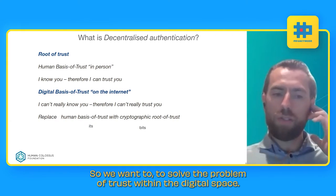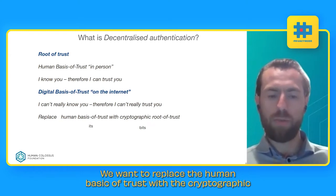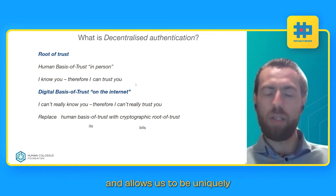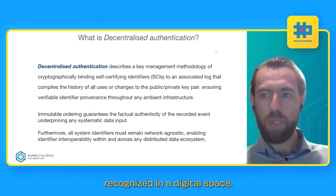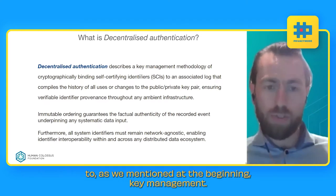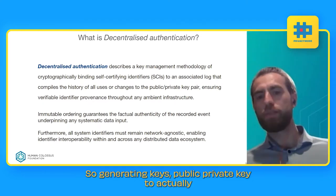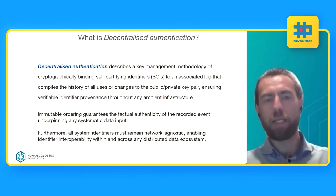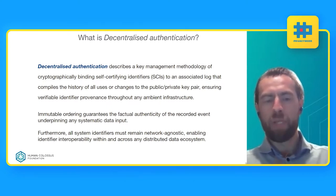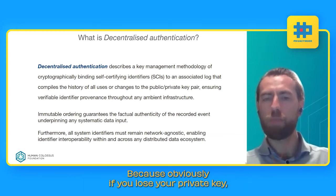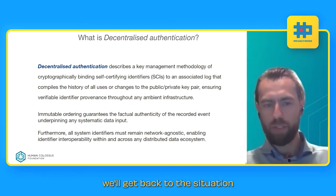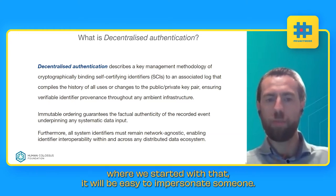Cryptography is based on the entropy you generate, and from that you generate elements used for cryptographical operations like signing, encryption, decryption, and verification. To solve the problem of trust in the digital space, we want to replace the human basis of trust with a cryptographical root of trust — something unique enough to allow us to be uniquely recognized in the digital space. This boils down to key management: generating public/private key pairs that allow a uniquely identifiable link. If you lose your private key, someone can take over your identifier, and we're back to the impersonation problem.